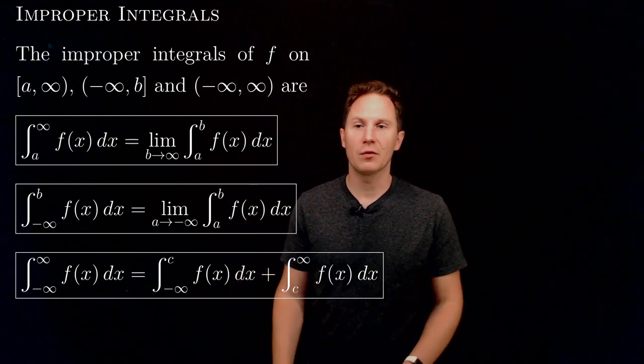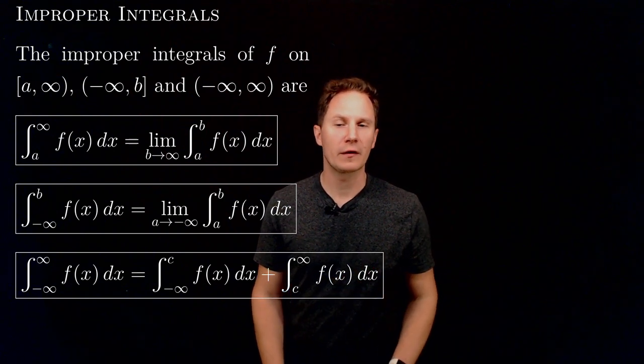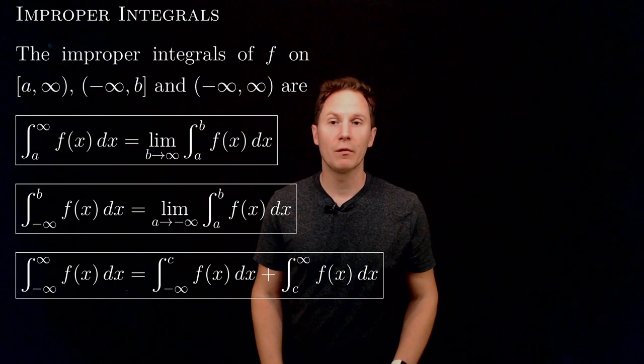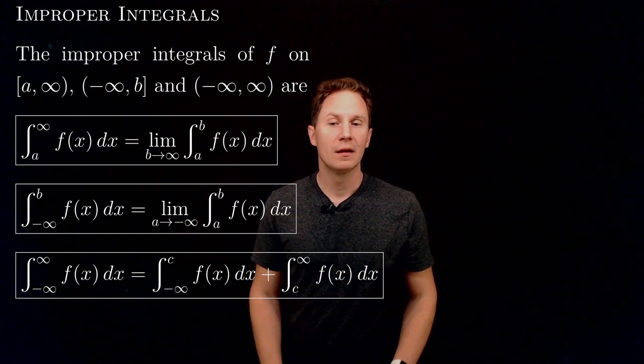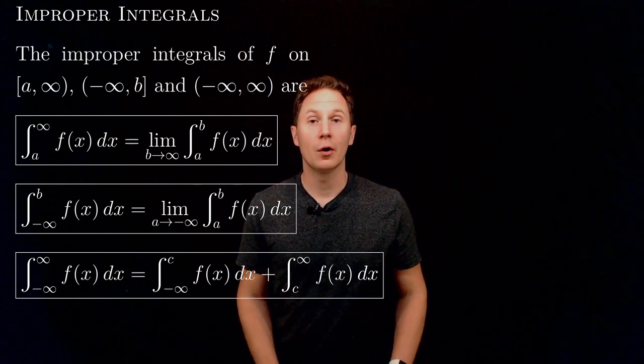These are the three cases that you see here with their definitions. For example, the integral from a to infinity of f of x dx is obtained by taking the integral from a to b of f of x dx and then taking its limit as b, the upper limit, goes to infinity.